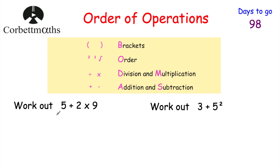So let's have a look at our first question: work out 5 plus 2 multiplied by 9. Looking at this question — any brackets? No. Any orders, like squares or cubes? No. Do we have any divisions or multiplications? Yes, we've got a multiplication. So we have to do 2 multiplied by 9 first. 2 multiplied by 9 is equal to 18.